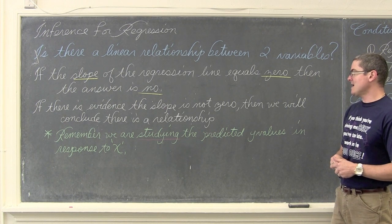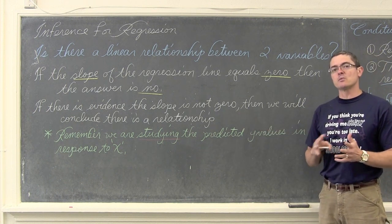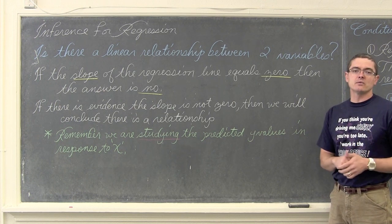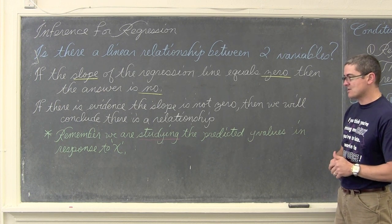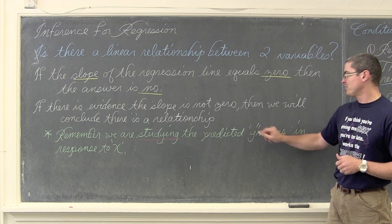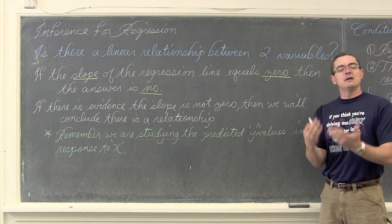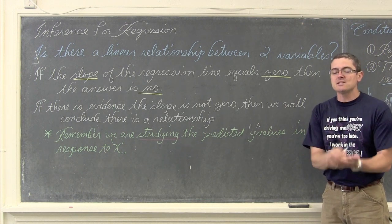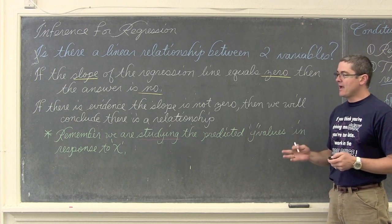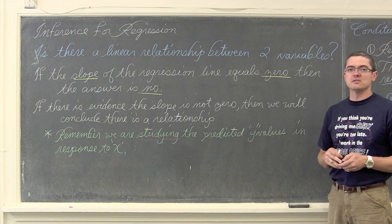If there is evidence that the slope is not equal to zero, then we will conclude that there is a relationship between the explanatory variable (the x-axis) and the response variable (the y-axis). We are studying the predicted y values in response to x — y-hat equals a plus bx, not x-hat. We do not predict our x values; we are predicting y values from a response of x.